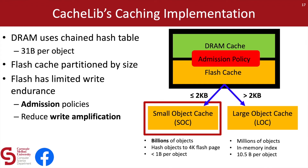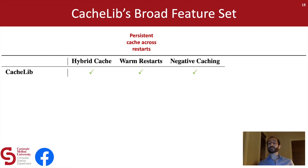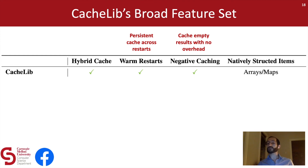The other main concern is reducing write amplification to the flash cache, which CacheLib addresses through various mechanisms — for example, CacheLib makes sure to write objects to the large object cache sequentially. In addition to hybrid caching, CacheLib provides a broad feature set. CacheLib implements warm restarts, allowing the state of the cache to persist across restarts and avoiding lengthy warm-ups when code updates are deployed. CacheLib also implements negative caching, allowing empty queries to be cached with no DRAM overhead, preventing those queries from going to backend systems for results that don't exist. CacheLib also natively implements structured arrays and HashMaps, so these data structures can be cached with no serialization overhead.